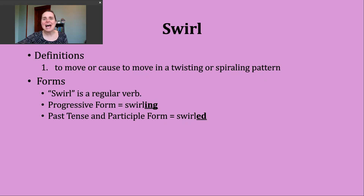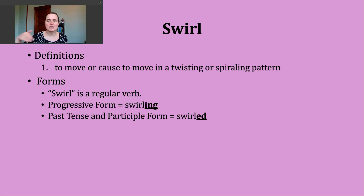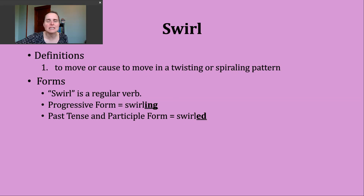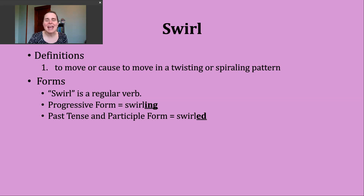Sometimes as I've read literature and someone is trying to describe the weather conditions, they might talk about the wind or dust swirling, moving in that twisting or spiraling pattern. You might see it used in connection to art. We'll continue to look at some more examples of it in just a few minutes in this video.